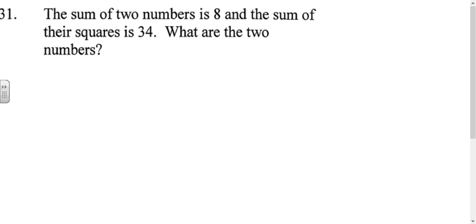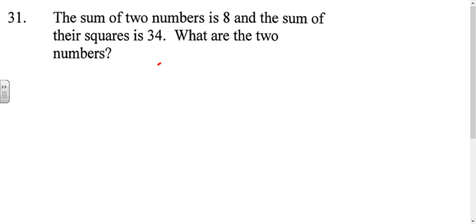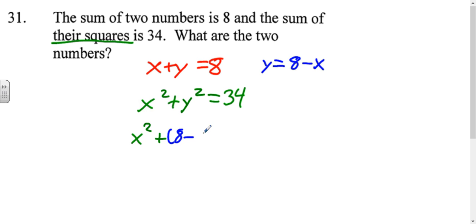For the next one, the sum of two numbers is 8 and the sum of their squares is 34. So let's call our two numbers x and y. When we add them, x plus y, we get 8. When we add the sum of their squares, that's x squared plus y squared, the answer is 34. So we can also solve this by substitution. We solve this top equation for y. We get y equals 8 minus x, and we'll plug that into the second equation. So that would look like x squared plus 8 minus x squared equals 34.